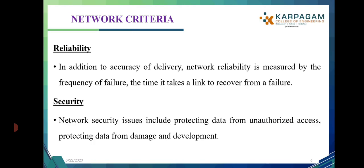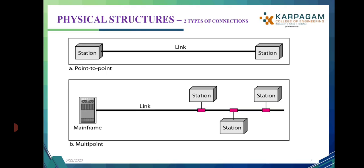Next we will see about physical structures — how devices are connected in a network. There are two types of connections: point-to-point connection and multi-point connection. Point-to-point connection is a dedicated physical link between two stations. Multi-point connection is where a physical link has n number of stations mounted on it, and all those stations are interconnected with each other.